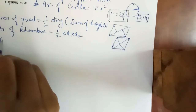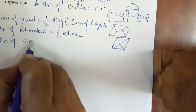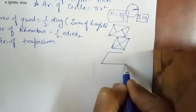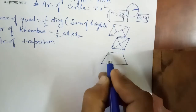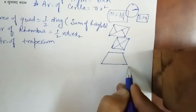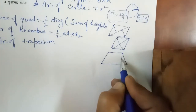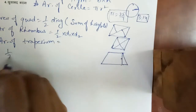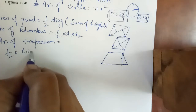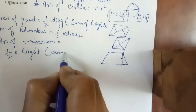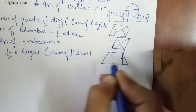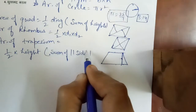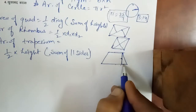Next is area of trapezium. Trapezium की shape में दो parallel sides होती हैं और दो non-parallel sides होती हैं. इसमें distance between the parallel sides होती है — इसको हम height भी बोल सकते हैं. तो इसका formula क्या है? Half of height multiply by sum of parallel sides. मतलब ये दोनों parallel sides दी होंगी, height दी होगी, तो उनका addition करके half of height into sum of parallel sides.